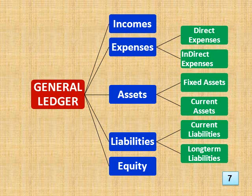This slide shows the general ledger split into the 5 classifications of incomes, expenses, assets, liabilities, and equity. It shows expenses split into the subclassifications of direct and indirect expenses. It shows assets split into the subclassifications of fixed assets and current assets. It shows liabilities split into the subclassifications of current liabilities and long-term liabilities.